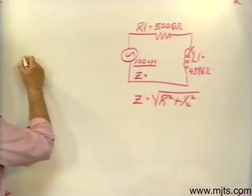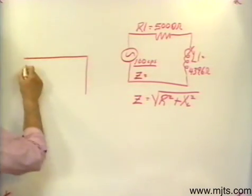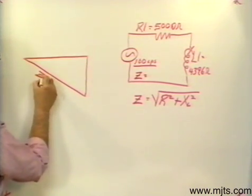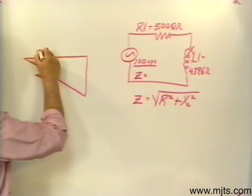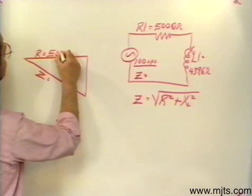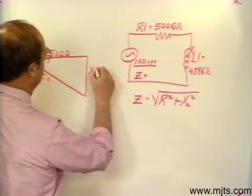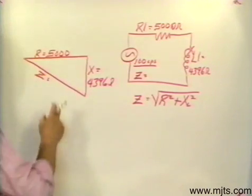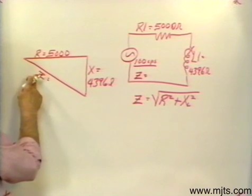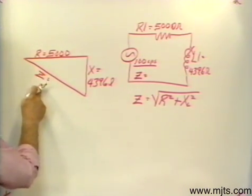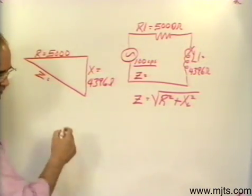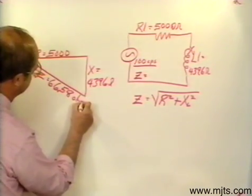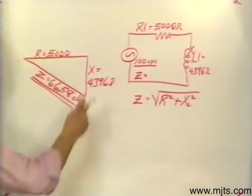We are taking a right triangle — this is the right triangle formula we are using. We are looking for Z. Our opposition to current flow R is equal to 5,000 and our reactance X sub L is 4,396 ohms. Using the right triangle, or vector method, I can find total opposition to current flow. I've calculated that out — we have 6,658 ohms. So this would be our impedance for that circuit.